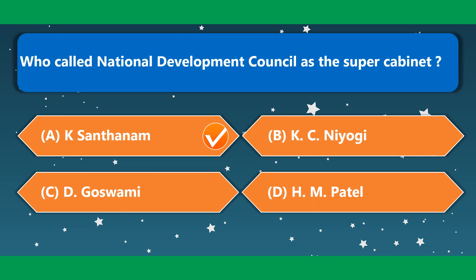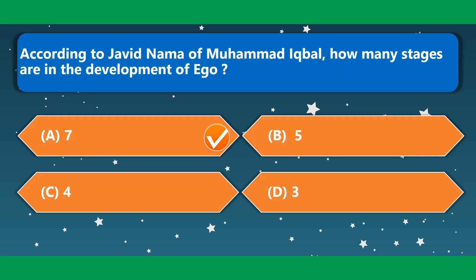Who called the National Development Council a 'Super-Cabinet'? K. Santhanam. According to Javed Nama of Muhammad Iqbal, how many stages are there in the development of ego? This is 7.